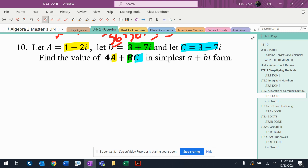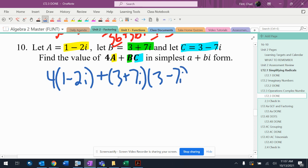I'm gonna replace everything, so it's gonna be 4(1-2i) plus (3+7i)(3-7i). That's what I get there. I got some algebra to do, so distribute the 4.